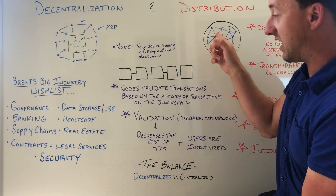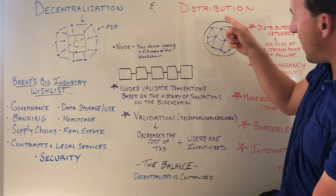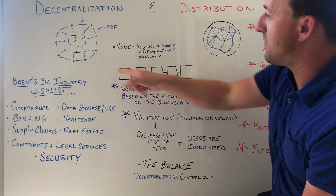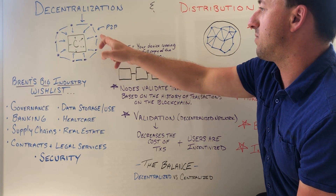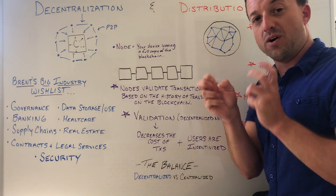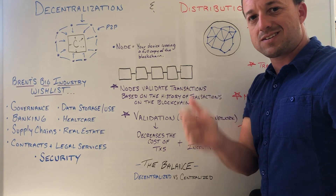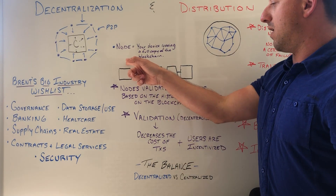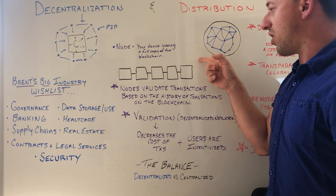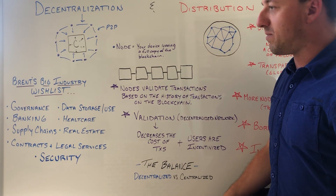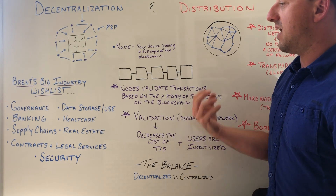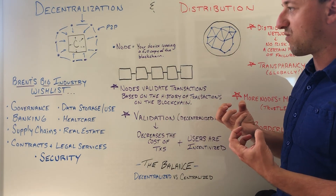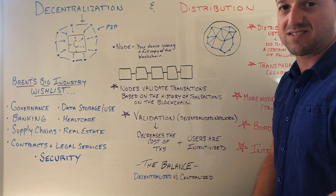These dots are representative of us — like each one of us, this is the world. These are all of us all over the globe, but they're also representing nodes. A node, or a full node — we'll just say a full node — is when your device, say your computer, is running a full copy of the blockchain. Using Bitcoin as the example: you download the entire Bitcoin blockchain on your computer, you want to contribute, you let the blockchain and the network use your computer. So you're essentially mining, and you are able to give back and receive rewards for your service to the community and the blockchain.